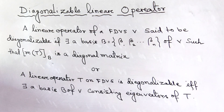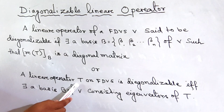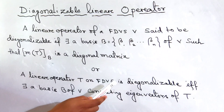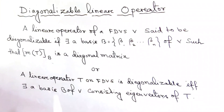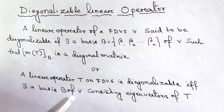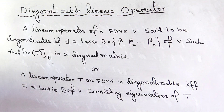Alternatively, this definition can also be given as: a linear operator T on a finite dimensional vector space V is diagonalizable if and only if there exists a basis of V consisting of eigenvectors of T. Now we try to establish this definition.